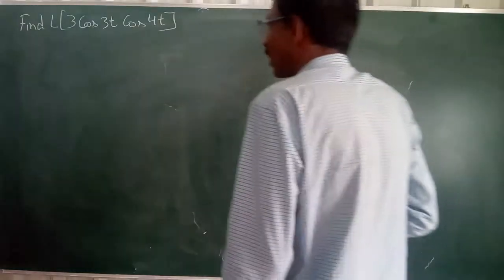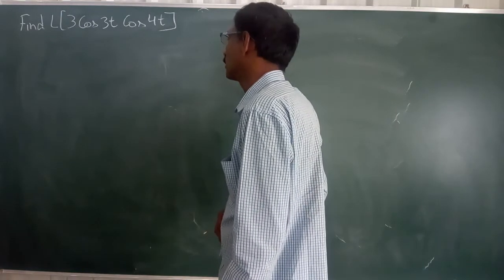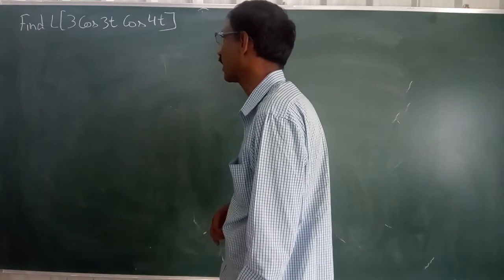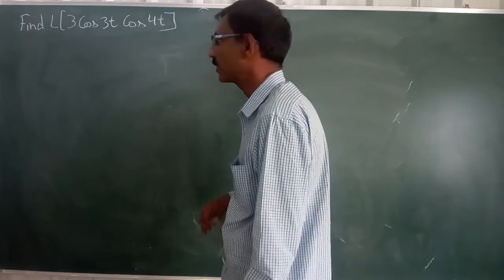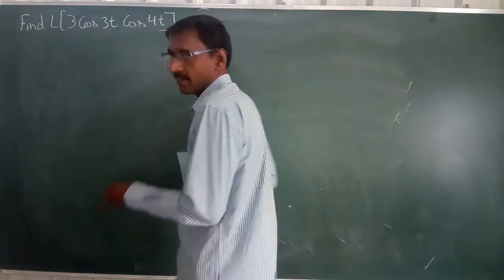See this, find the limit as theta approaches 0 of 3 cos 3 theta over cos 4 theta. Here we should go one corner to solve it. I will explain here.